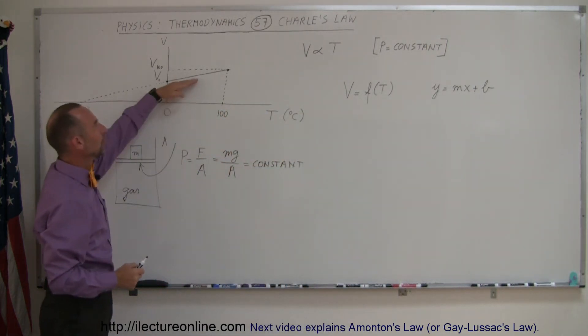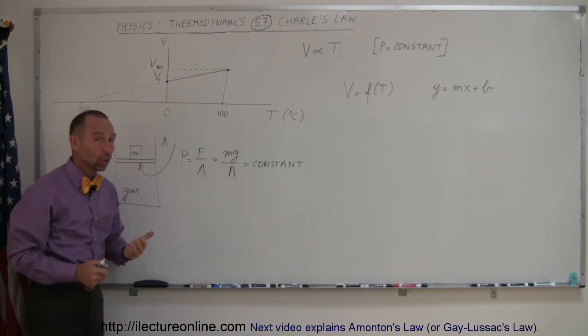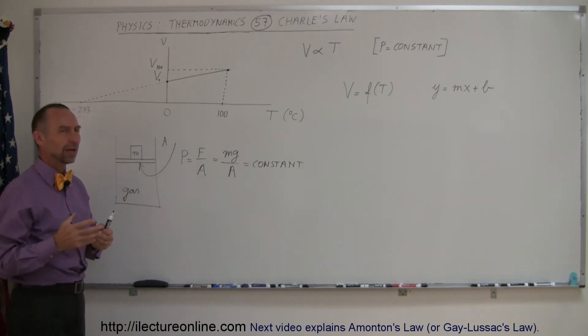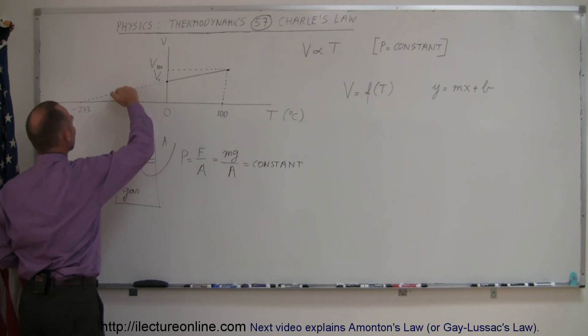So they measured the slope, and they started extrapolating out. And they said, well, what if the gas was colder and colder and colder? What would happen to the volume? Of course, they were not able to cool down to very, very low temperatures like we can today. But if they extrapolate this mathematically, they find out that, theoretically,